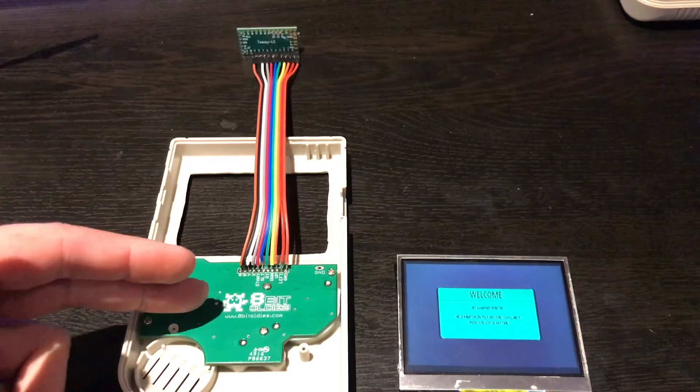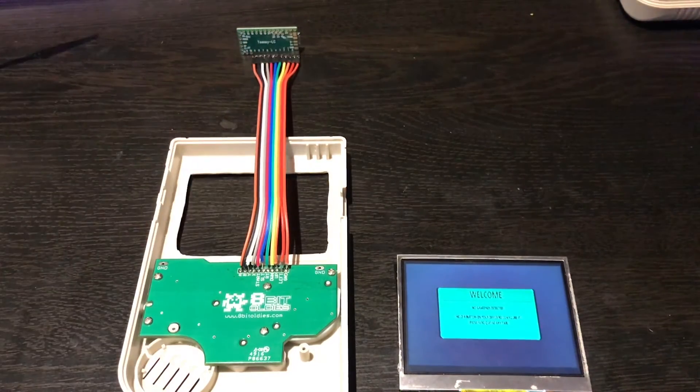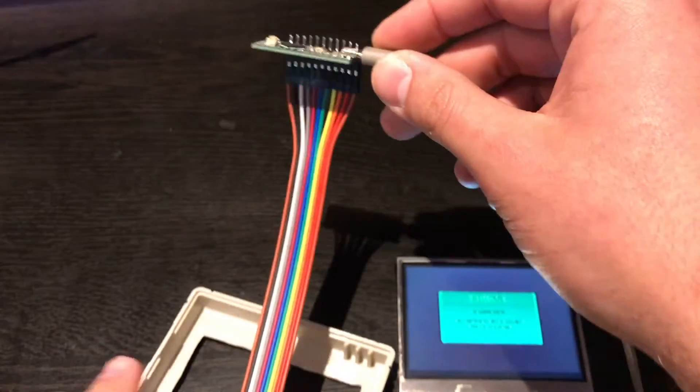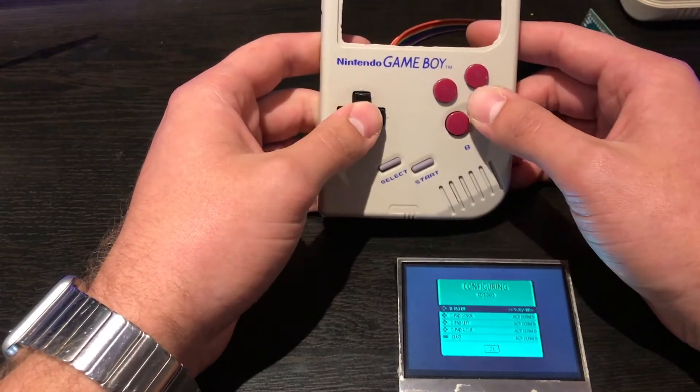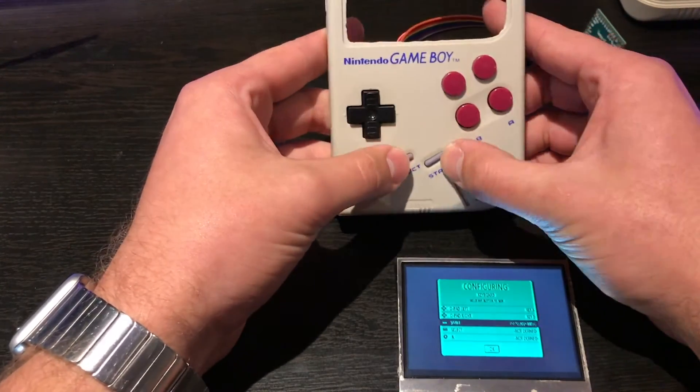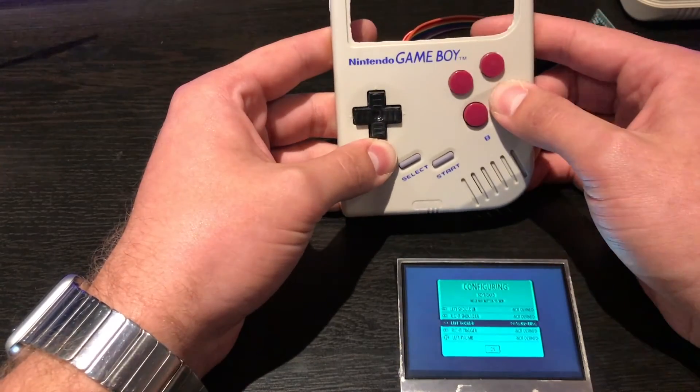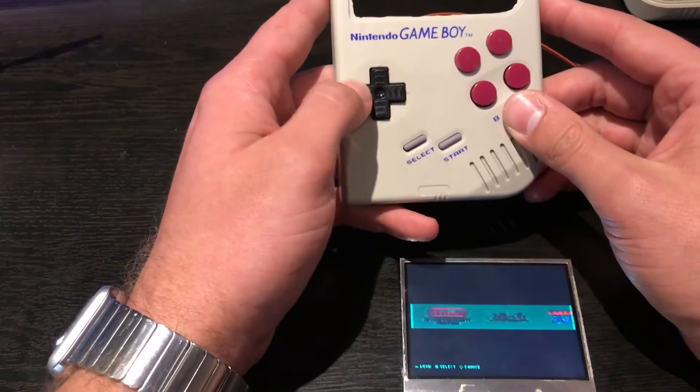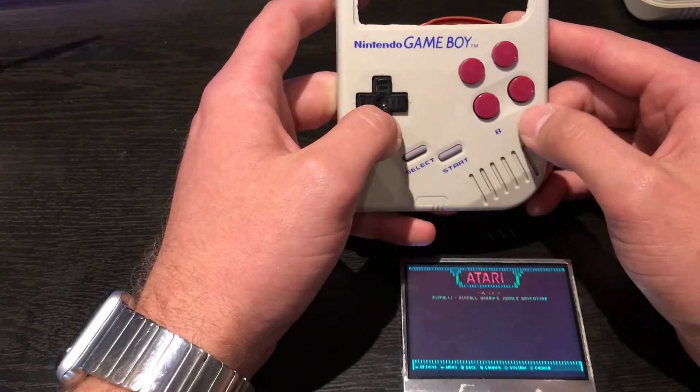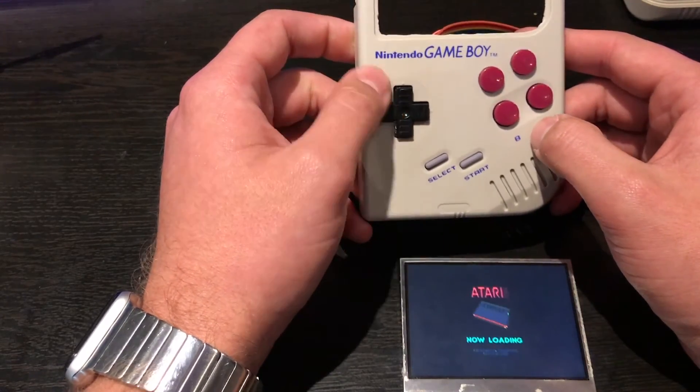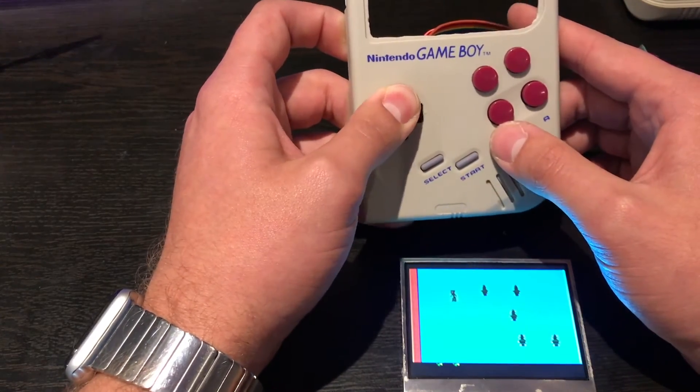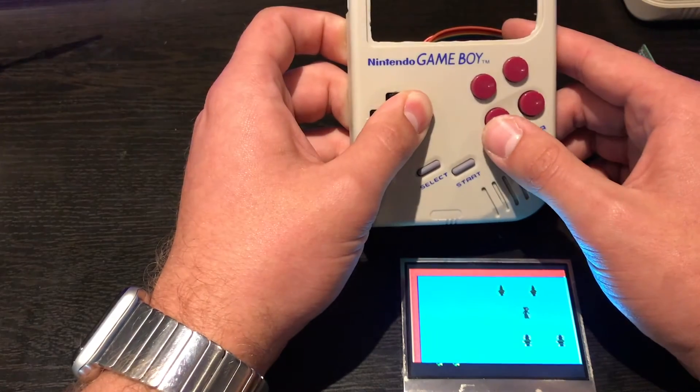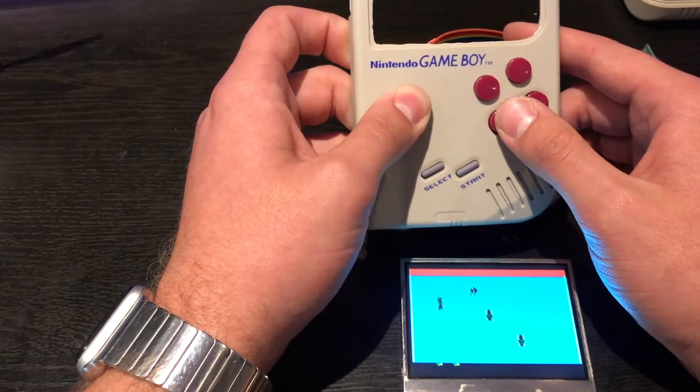Once you have your Teensy wired up to your PCB, you can now go ahead, plug it in with the USB, and test it out. I'm going to be testing it out on my Raspberry Pi. And there you go, now you can see it's actually fully functioning. I'll go ahead and open up a game just to show you that it is working. Now this is actually Halo 2600 for the Atari 2600. So I'll go ahead and actually leave a link for this ROM in the description below.